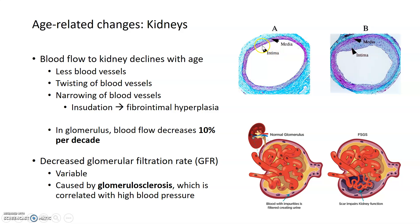Fibrointimal hyperplasia decreases the diameter of blood vessels in the kidney. By decreasing blood flow to the kidney, this decreases the filtration rate. In the glomerulus, blood flow has been shown to decrease 10 percent per decade, and it happens at a relatively even rate as we age. Kidney function actually starts declining relatively early in life and continues at a steady pace of about 10 percent per decade after that.